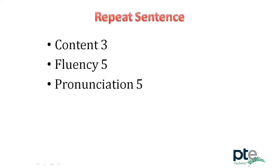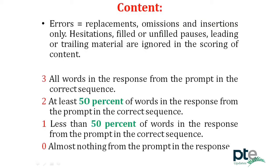Next is repeat sentence. In repeat sentence, three marks are awarded for content, five for fluency, and five for pronunciation. Replacements, omissions, and insertions are considered errors in content. Any hesitations, failed or unfailed pauses, and leading or trailing materials are ignored in content scoring. However, hesitations and pauses are scored in fluency — so they are more dangerous than content errors. Make sure you avoid hesitations and pauses; don't waste time trying to find the correct content.